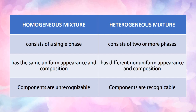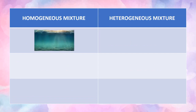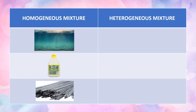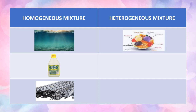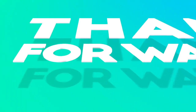Homogeneous mixture components are unrecognizable, while heterogeneous mixture components are recognizable. The examples of homogeneous mixtures are sea water, vinegar, and steel bars. The examples of heterogeneous mixtures, on the other hand, are halo-halo, chocolate chip cookies, and beach sand.